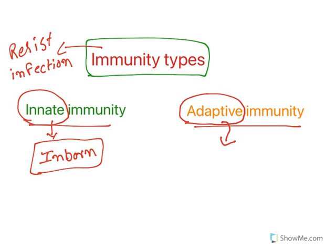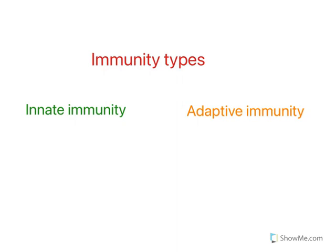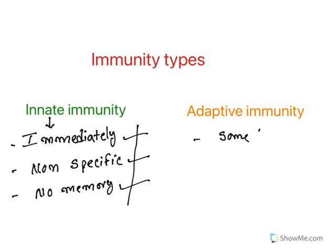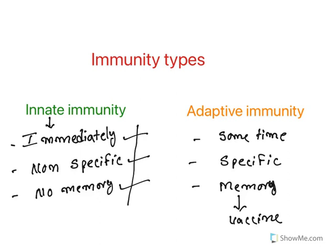The differences between these two branches: innate immunity shows action immediately whenever human beings are affected with any infection, but it is non-specific — it will be acting broadly — and it doesn't have any memory. Adaptive immunity takes some time to develop, is very specific to a particular pathogen, and the best thing is it has got memory. Based on this memory, vaccines are developed.